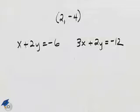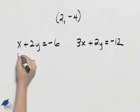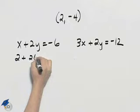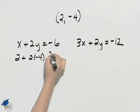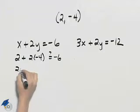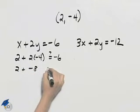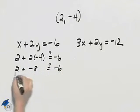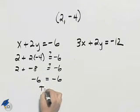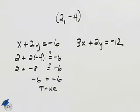To determine if the point two, negative four satisfies the system, we will substitute x equals two and y equals negative four. In the first equation, we have two plus two times negative four. Evaluating, two plus negative eight is negative six. So we obtain negative six equal to negative six, which is a true statement.